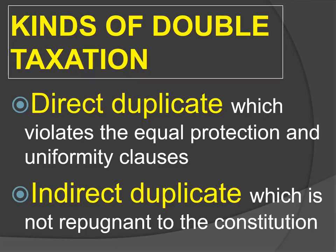There are two kinds of double taxation. You have direct duplicate taxation, which violates the Equal Protection Clause and Uniformity Clause of the Constitution, and therefore one of the tax laws would be invalidated. On the other hand, you have indirect duplicate taxation, which is not repugnant to the Constitution.